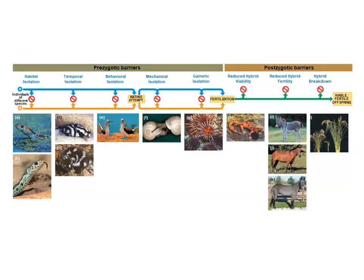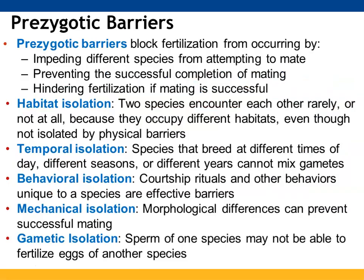For prezygotic barriers, there are five types: habitat, temporal, behavioral, mechanical, and gametic. For postzygotic, there are three: reduced hybrid viability, reduced hybrid fertility, and hybrid breakdown. Prezygotic barriers basically prevent fertilization from taking place by impeding species from mating, preventing mating from being successfully completed, or hindering the fertilization process even if mating is successful.